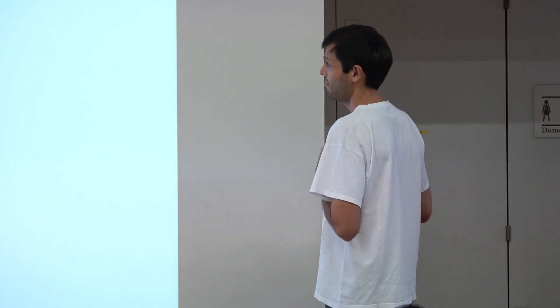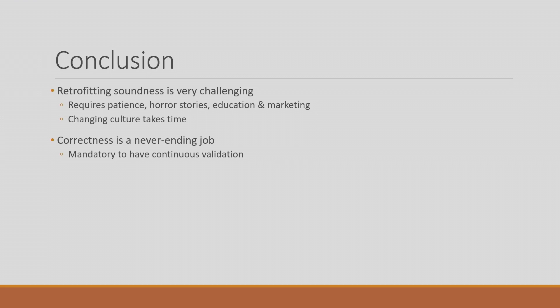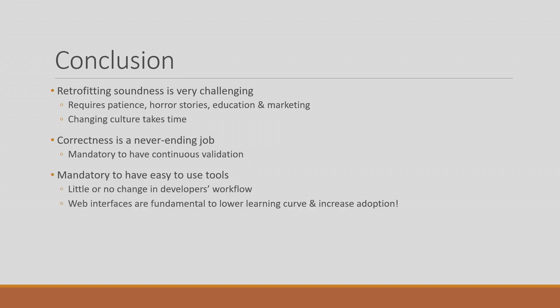Correctness never ends — we catch regressions all the time. It's a never-ending job. It's really important to have easy-to-use tools. Sometimes we researchers want the best tool that verifies everything, but that doesn't matter. What matters is whether developers can actually use it. It's better to sacrifice on fanciness or the amount of crazy things it can do, and just give a tool that people can use. That's my philosophy.